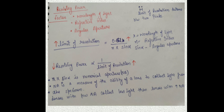So resolving power depends on the wavelength of light. If the wavelength is less, resolving power is more. If the refractive index is more, limit of resolution is less, and therefore resolving power is more. If angular aperture is more, limit of resolution is less, and resolving power is more. I hope this concept is very clear — this is the basic principle that we use in every microscope.